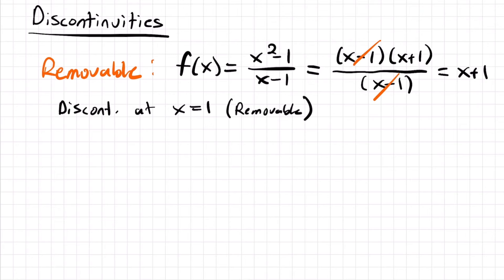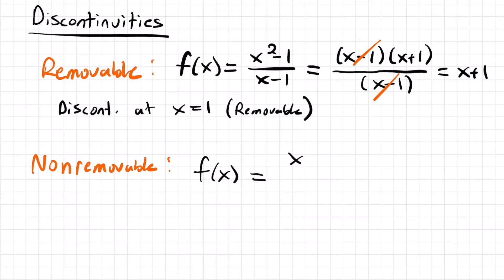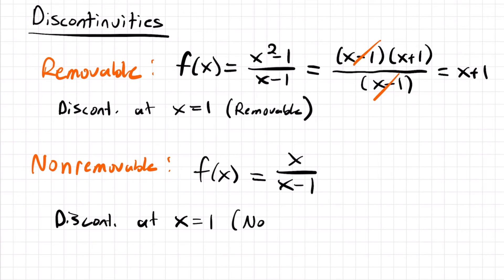A non-removable discontinuity is one that cannot be removed — we cannot redefine the function to make it continuous at that point. An example is f(x) = x/(x - 1). We have a discontinuity at x equals one because plugging in one gives zero in the denominator — undefined. Unlike the previous example, this function is already in its simplest form and cannot be factored or reduced. So no matter what we do, we cannot remove the discontinuity at x equals one. We would say we have a non-removable discontinuity at x equals one.